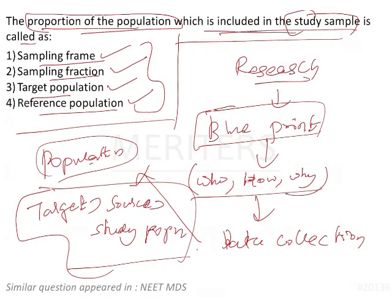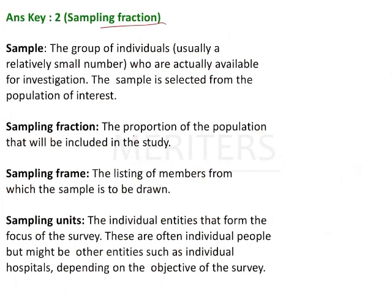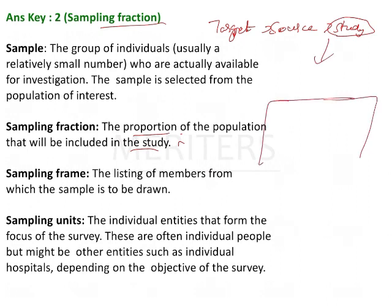The proportion of the population which is included in the study sample — that is sampling fraction. Whenever you see the word 'proportion,' that indicates sampling fraction. Target population is greater than source population, which is greater than study population, and within study population there is a sampling frame from which samples are drawn.